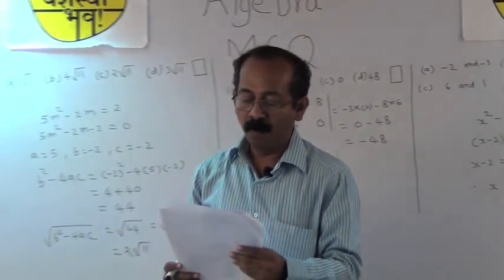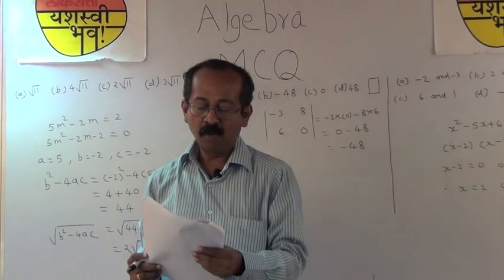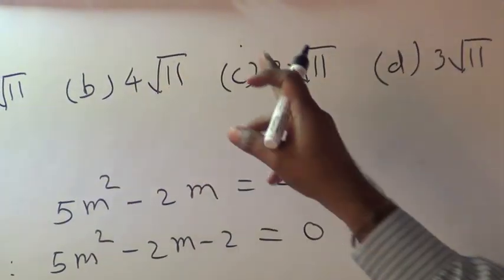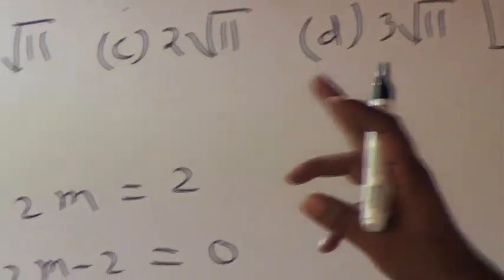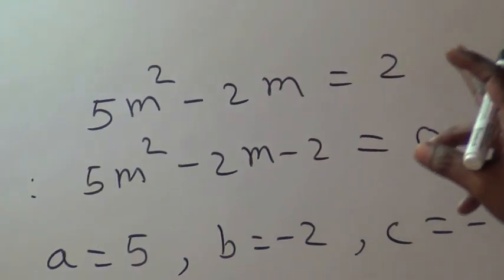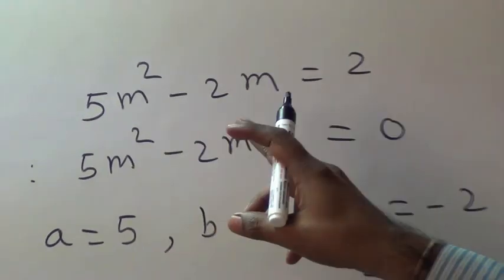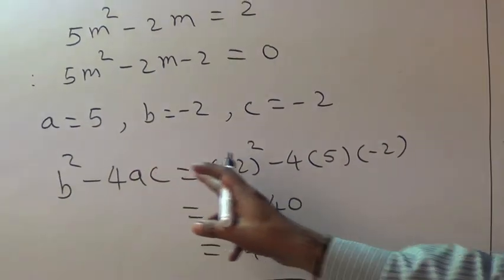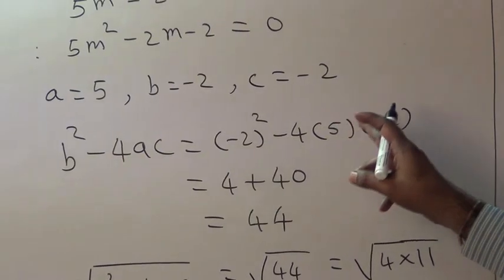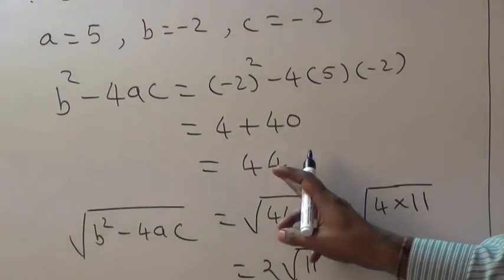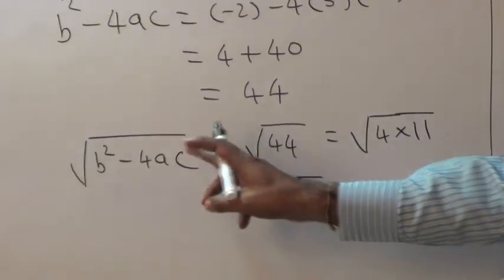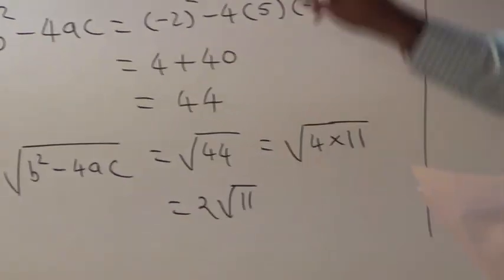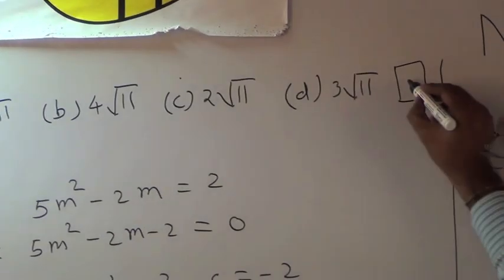Next: find the value of √(b² − 4ac) for the quadratic equation 5m² − 2m = 2. The alternatives are a) √11, b) 4√11, c) 2√11, d) 3√11. Rearranging: 5m² − 2m − 2 = 0. Here a = 5, b = −2, c = −2. So b² − 4ac = (−2)² − 4(5)(−2) = 4 + 40 = 44. Therefore √(b² − 4ac) = √44 = 2√11, and alternative c represents 2√11. So c is the correct alternative.